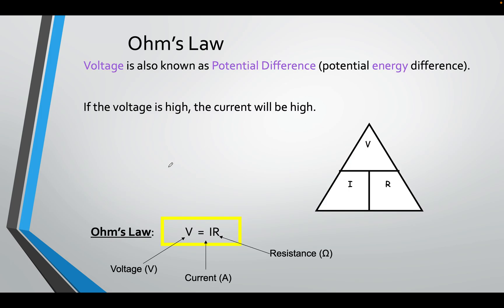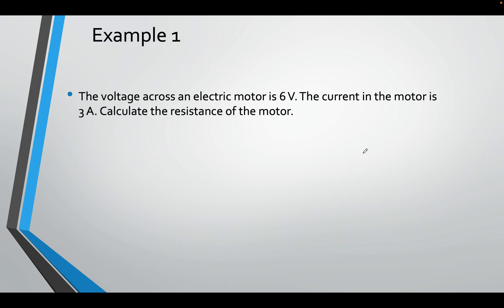That takes us to Ohm's law, which we did in the lab and in the simulation. Potential difference, potential energy difference. If the voltage is high, the current will also be high. Ohm's law, V equals IR. Increasing the current, increasing the voltage, and so forth. You should be able to take this formula and rearrange to find the current and the resistance. This is the fundamental formula. We will be using it a lot.